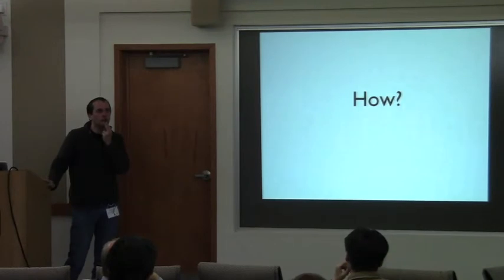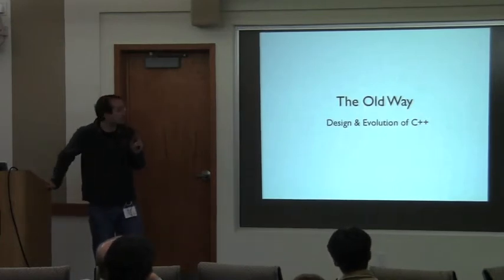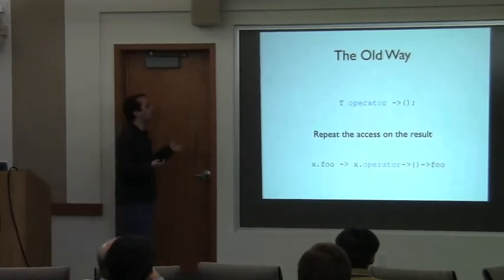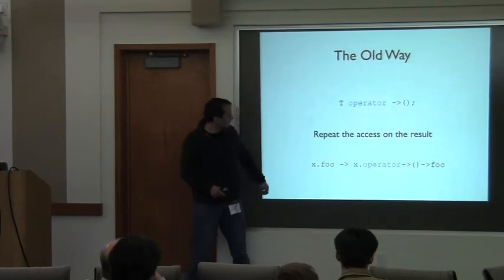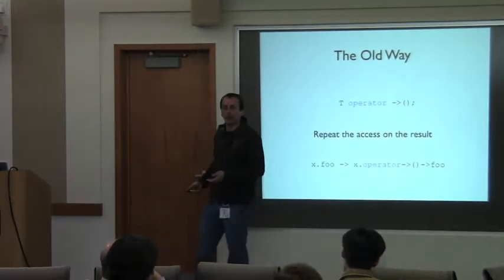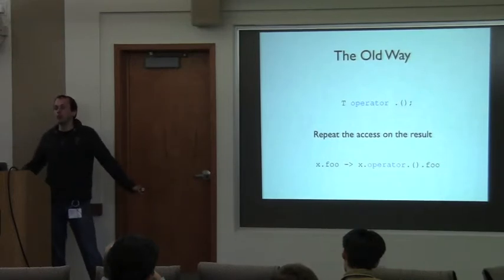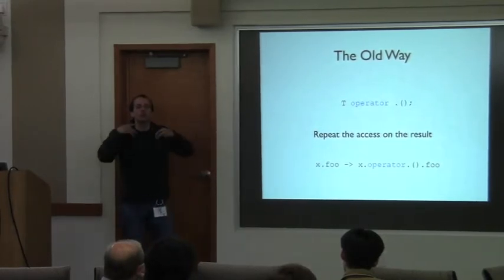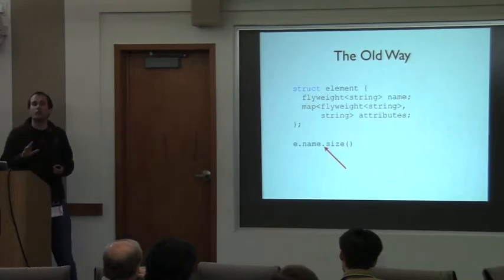Overloading the dot operator is not a new idea. Bjarne Stroustrup actually talks about this in Design and Evolution of C++. Basically, the arrow operator is a unary operator — you have it as a member function and return a different object. The compiler turns x->foo into x.operator->() and on the result uses the arrow operator again, so you can forward to a different object. This is how smart pointers work. They proposed doing the same thing for dot: x.foo is turned into x.operator.() and on the return value you do the member access.